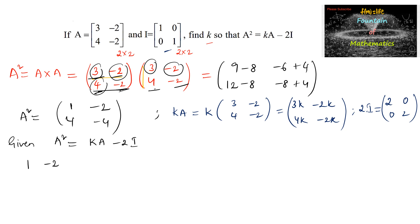So that we can have A squared matrix is 1, negative 2, 4 and negative 4, is equal to K times A matrix, that is 3K, minus 2K, and 4K and negative 2K.